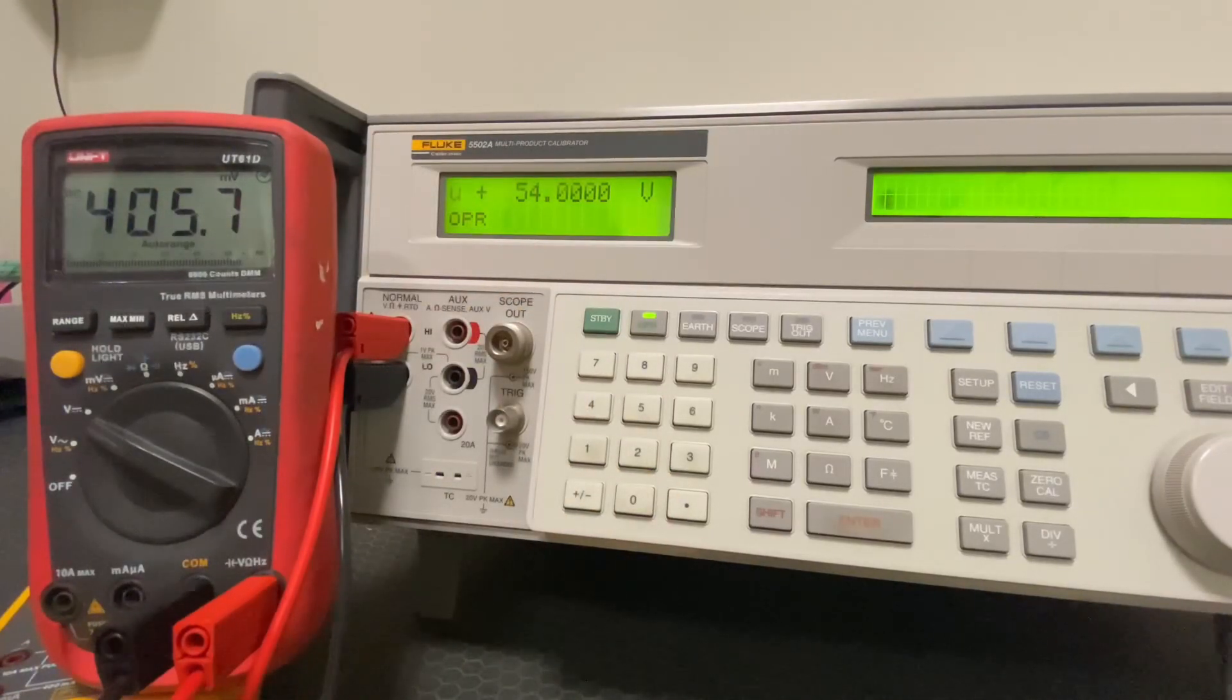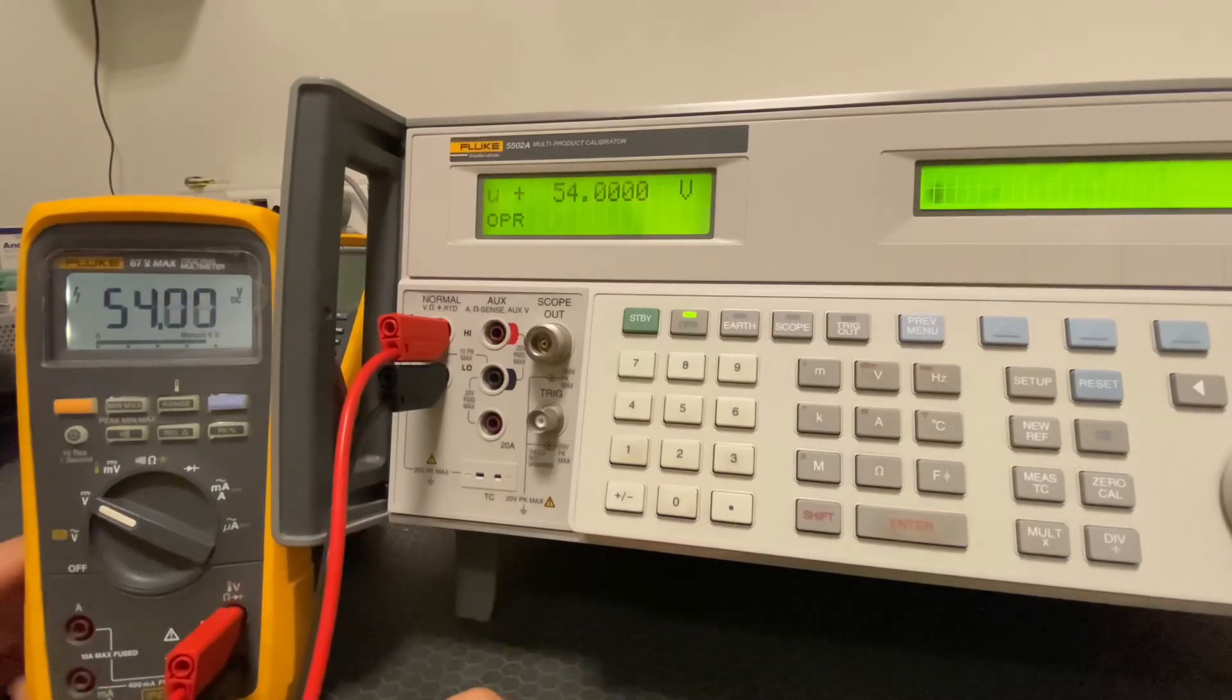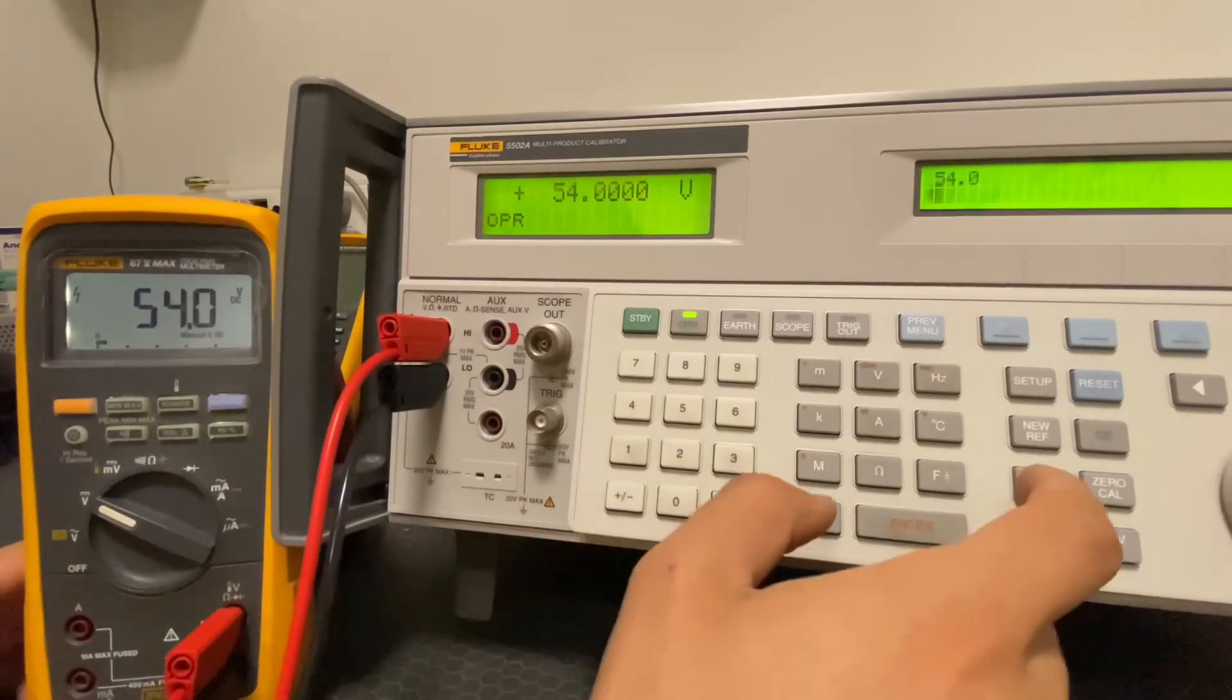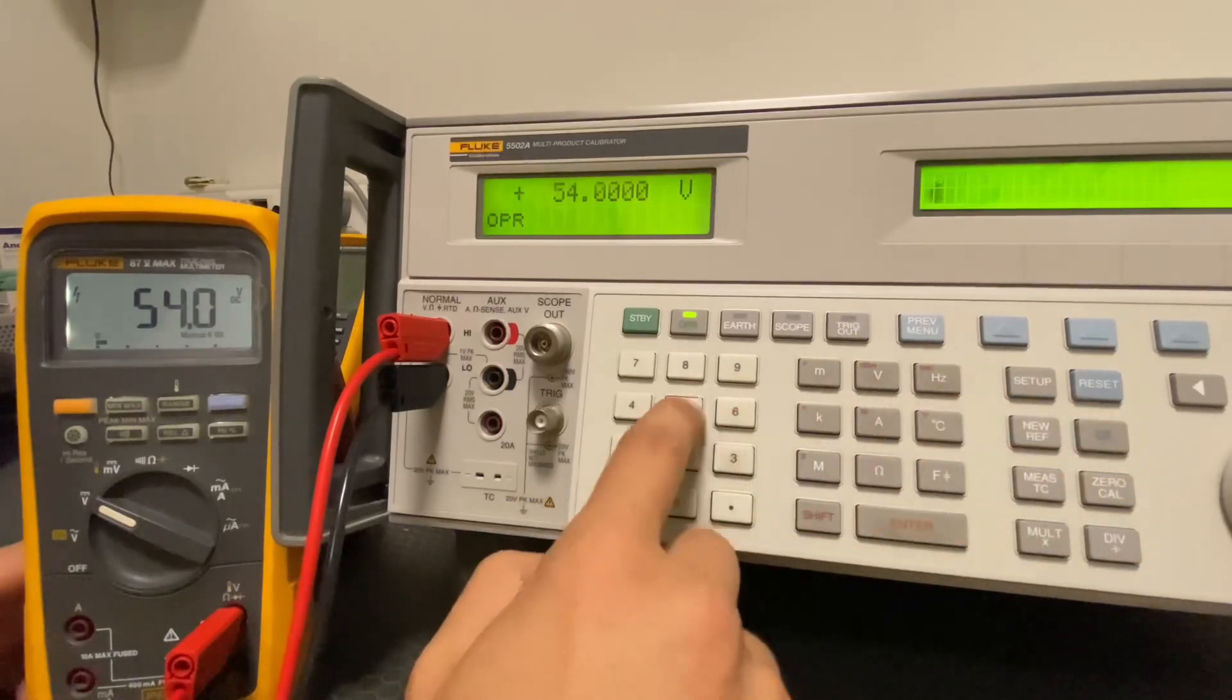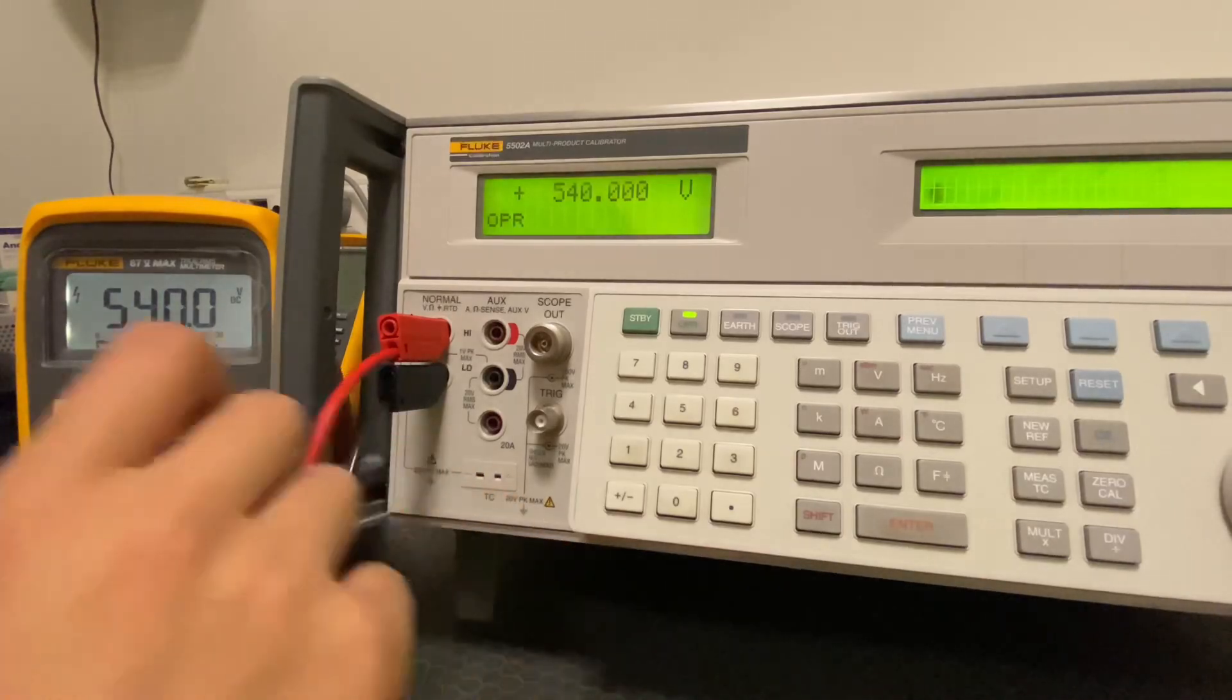Anyway, let's measure 54 volts. Now we will measure 54, 540, and 900 volts. We will check on the Fluke first, then on the Unit multimeter. It worked on the third drive. When the DC voltage value increases, a beep sound may occur. This is a warning.